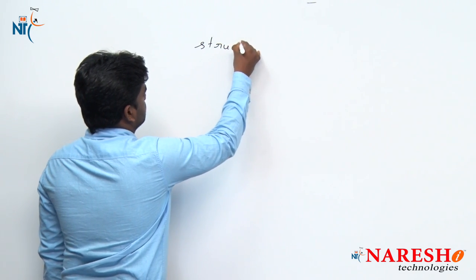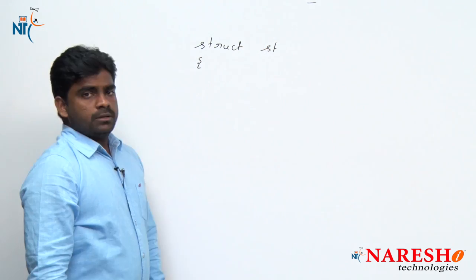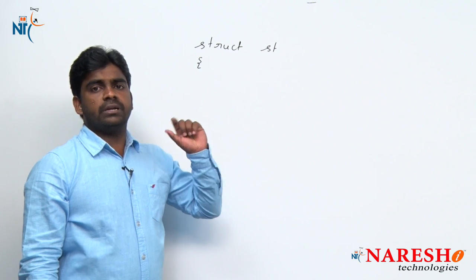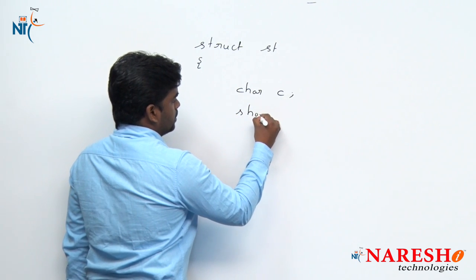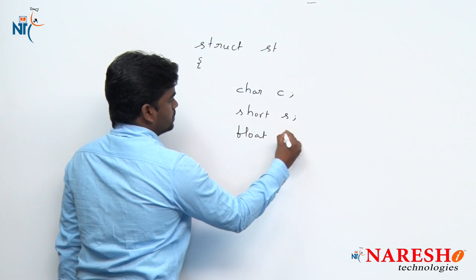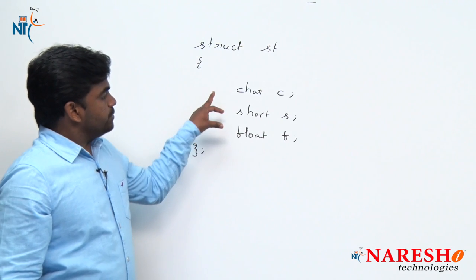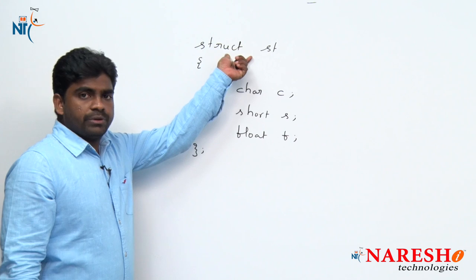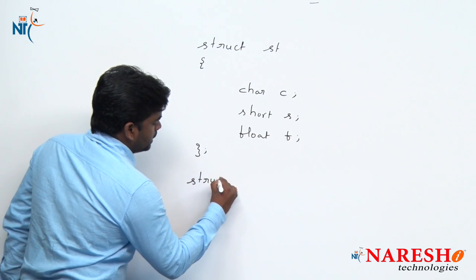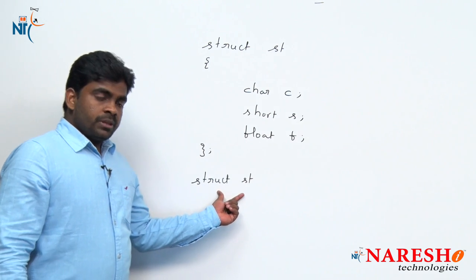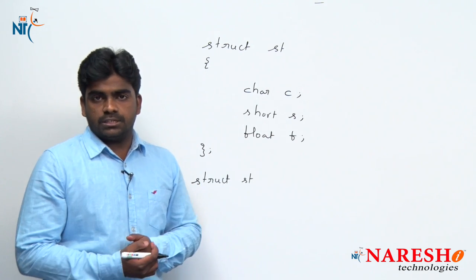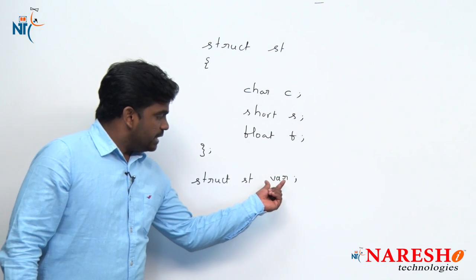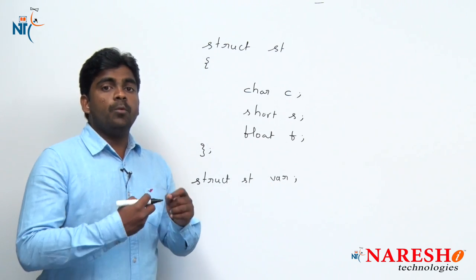See the examples of structure as well as union. Suppose here we are declaring one structure — struct, any name you can give, suppose 'st' we are taking. Inside the structure I am declaring three variables of three different data types: one is a character 'c', second one is a short type 's', third is a float data type, suppose 'f'. Total three variables we declared. Whenever we allocate memory to this structure variable — struct st — this is the data type. When memory will be allocated means whenever you declare a variable using this data type, then it will get memory allocation. For example, variable name we are taking 'var', then memory will be allocated to this variable.